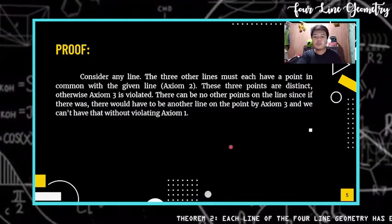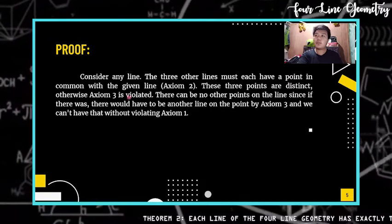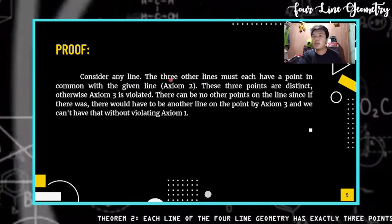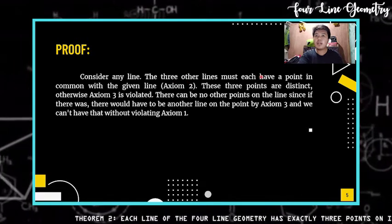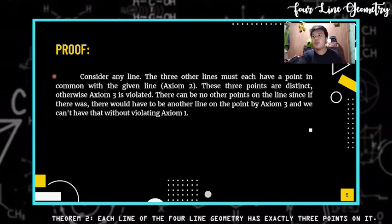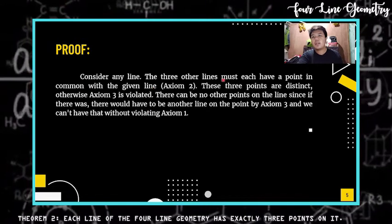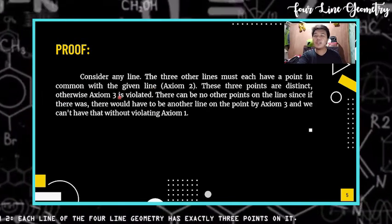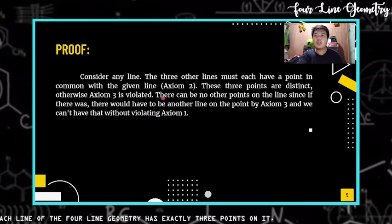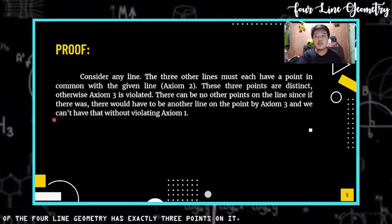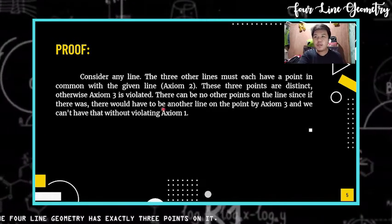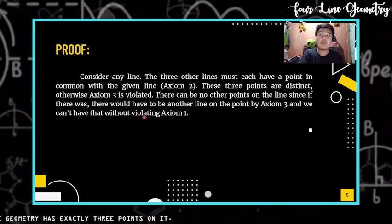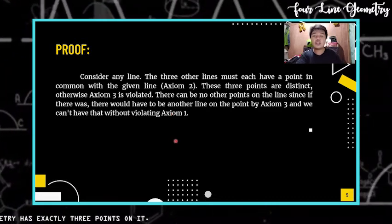For the proof of theorem two: consider any line. The three other lines must each have a point in common with the given line. These three points are distinct; otherwise, axiom three is violated. There can be no other points on the line since if there was, there would have to be another line on the point by axiom three, and we cannot have that without violating axiom one.